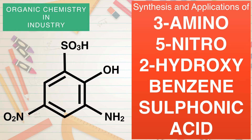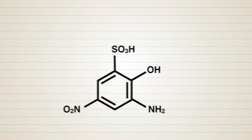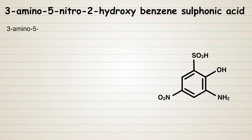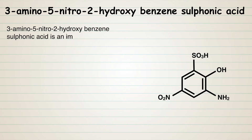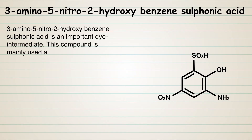Synthesis and application of 3-amino-5-nitro-2-hydroxybenzene sulfonic acid. This compound is an important dye intermediate, mainly used as a coupling agent for azoic dyes.